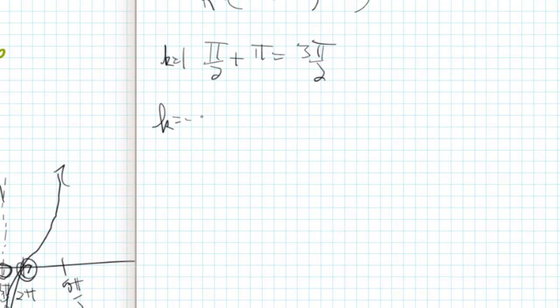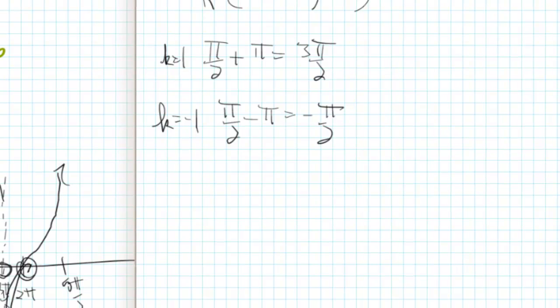If k equals negative 1, then that's going to be pi halves minus pi, which is negative pi halves, which is that asymptote right there.